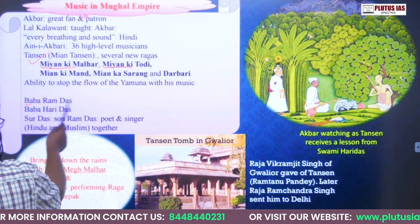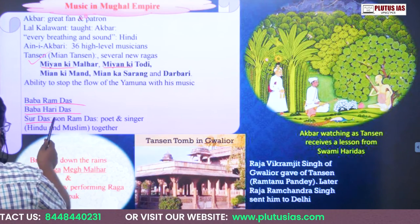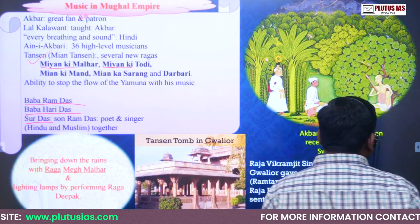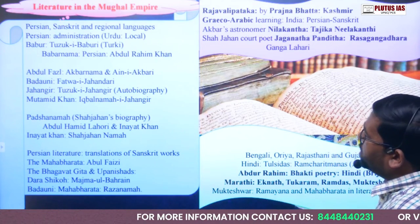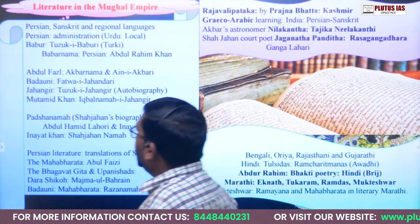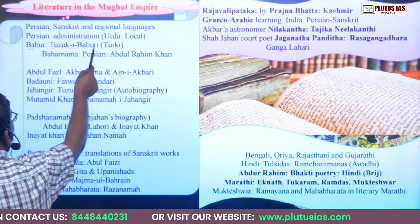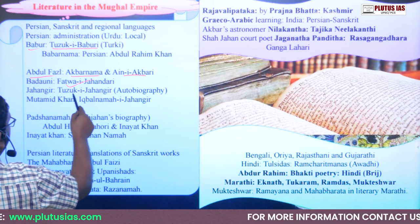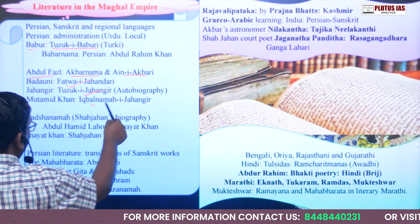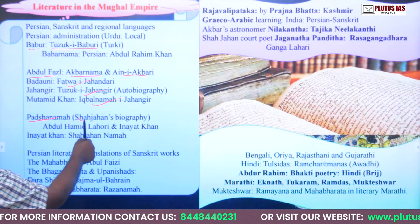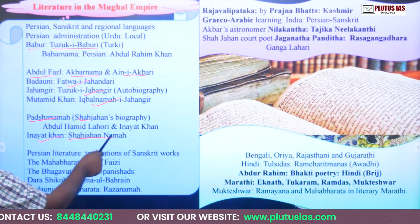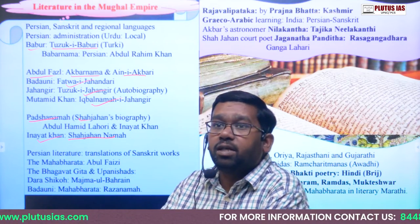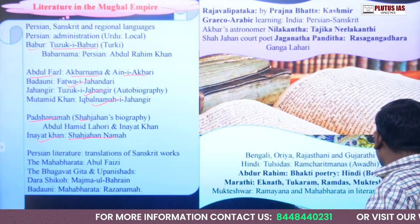The most important persons in Mughal music include Ram Das, Hari Das, Sur Das, and Rahim. In literature, we have Persian and Sanskrit literature. Babur wrote Baburnama; Abul Fazl wrote Ain-i-Akbari and Akbarnama; Badauni wrote Muntakhab-ut-Tawarikh; Jahangir wrote Tuzuk-i-Jahangiri; Muhammad Khan wrote Iqbalnama-i-Jahangiri; and Padshahnama was written by Shah Jahan's court. Inayat Khan wrote Shahjahannama. Hindi, Bengali, and Punjabi literature also flourished during this period.